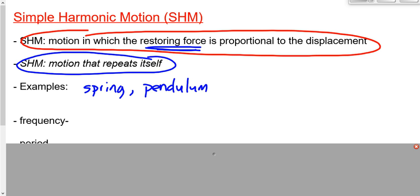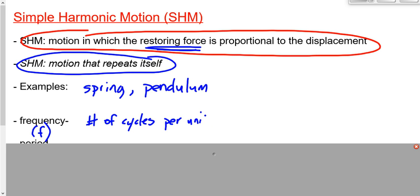Now, a couple of terms we've seen in our last unit — terms we should know because we just wrote a test on circular motion. Frequency, given by the symbol f, is defined as the number of cycles per unit time, usually per second. The equation for frequency is the number of cycles over the time, just like in the last unit. The units would be hertz.